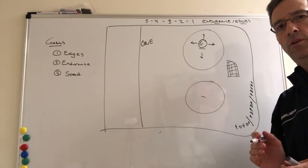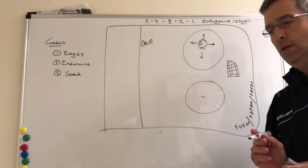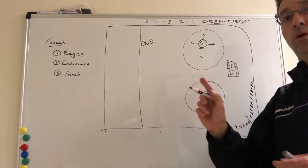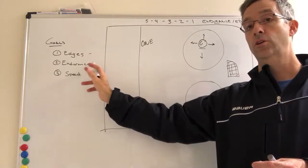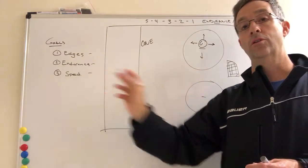Okay, this is the five four three two one endurance drill. The goals of this drill are number one to work on your edges, number two to work on your endurance, and number three to work on your speed.